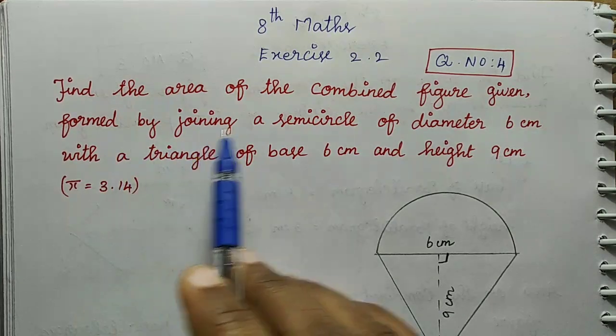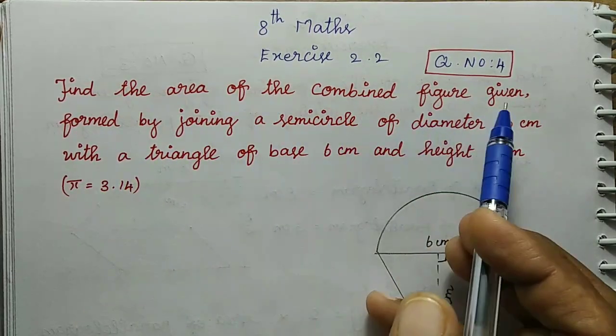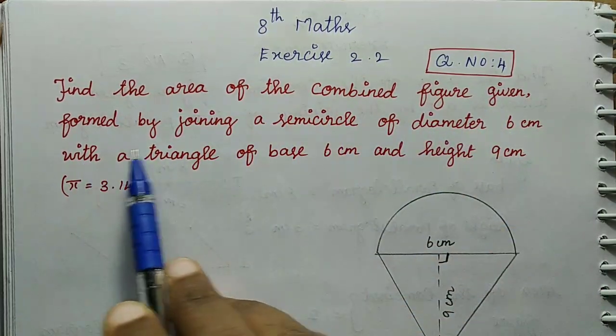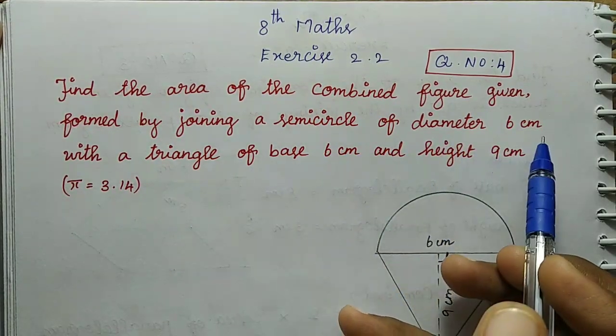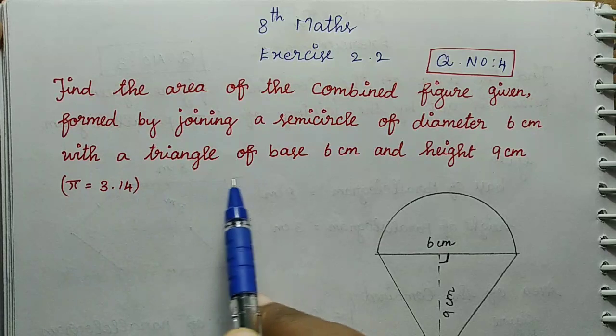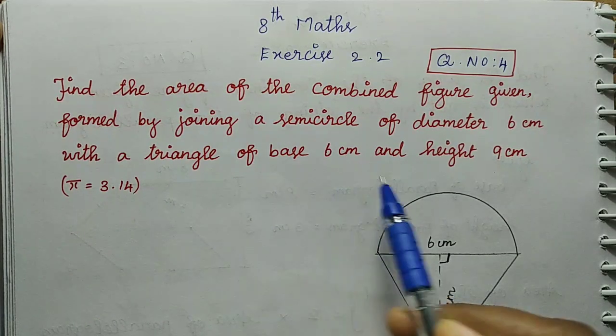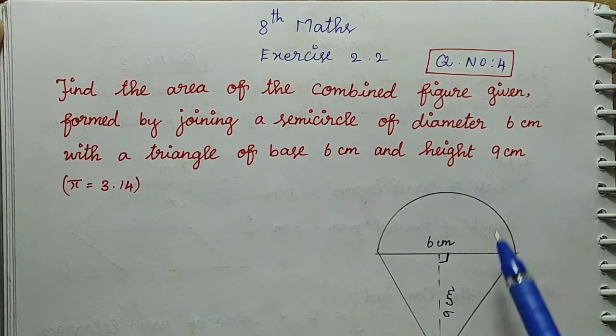Find the area of the combined figure given, formed by joining a semicircle of diameter 6 cm with a triangle of base 6 cm and height 9 cm.